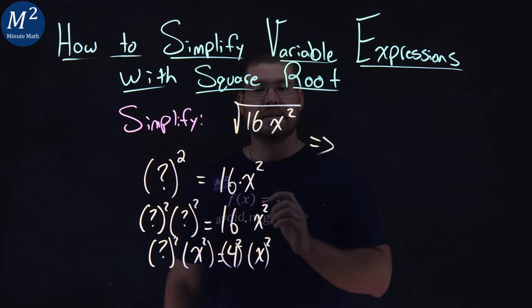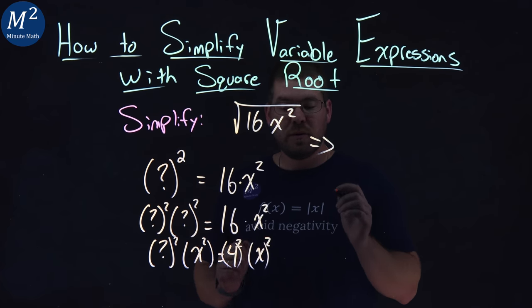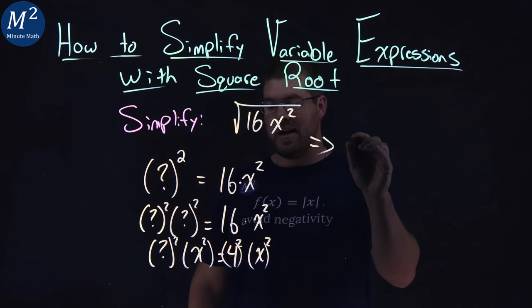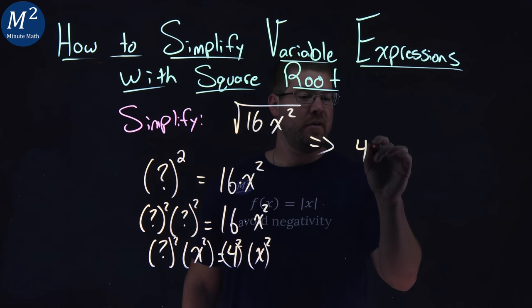So, the square root of 16x squared comes out to be just a 4x.